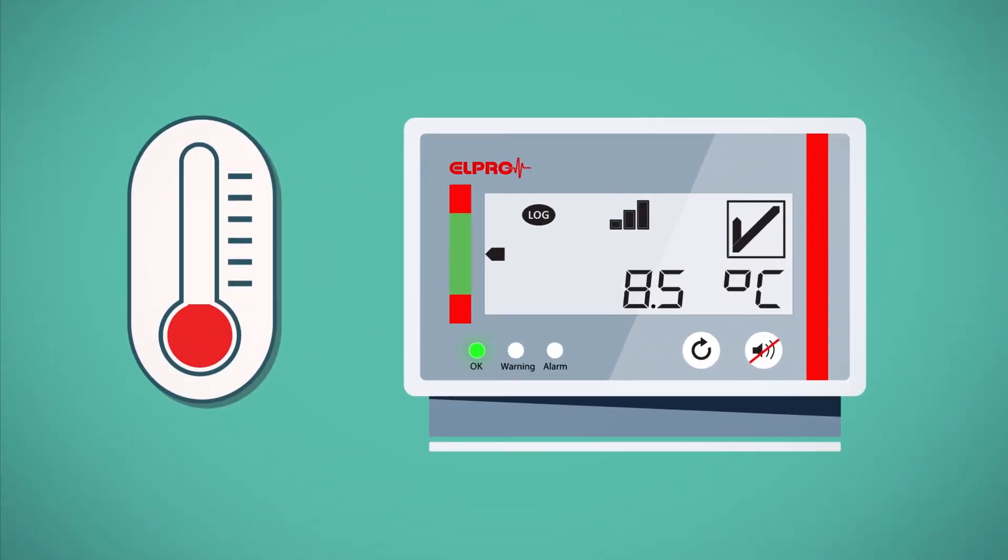In case of a temperature alarm, the base alerts you with a blinking red light and an alarm tone. Additionally, you'll see the alarm sign on the display. You can silence the alarm tone by pressing the silent button.